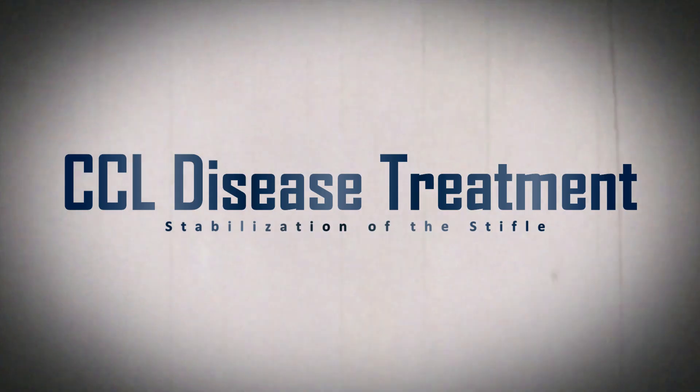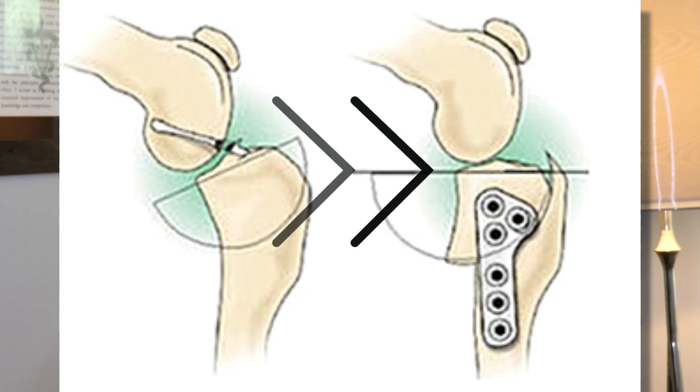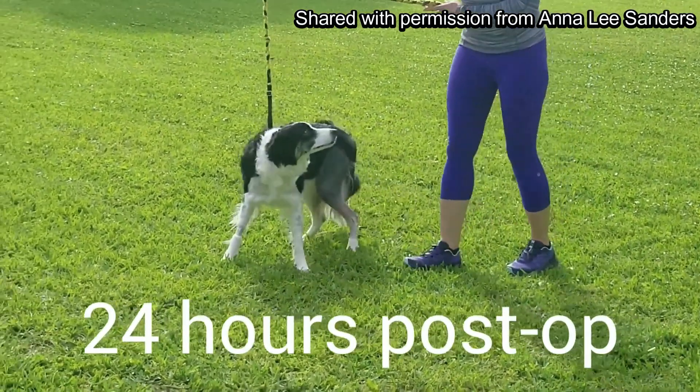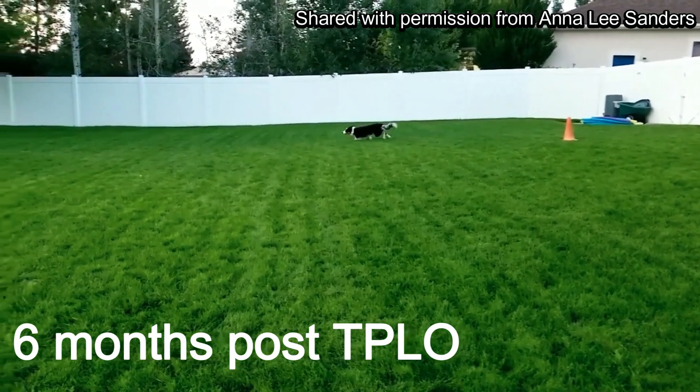For all sizes of dogs, the sooner surgical stabilization of the stifle can be done, the better. A tibial plateau leveling osteotomy, or TPLO, is currently the gold standard treatment. A semi-circular cut is made in the tibia and the top of the tibia is rotated so that instead of being at an angle it is brought down to about two to three degrees. This means that when the femur bears weight down onto the tibia it now has a stable, fairly flat surface to land on, making the knee biomechanically stable again. Because the bone has been cut, a plate is placed on the bone so it can heal in the new orientation. One research study showed 93% of TPLO patients return to full function within a year.